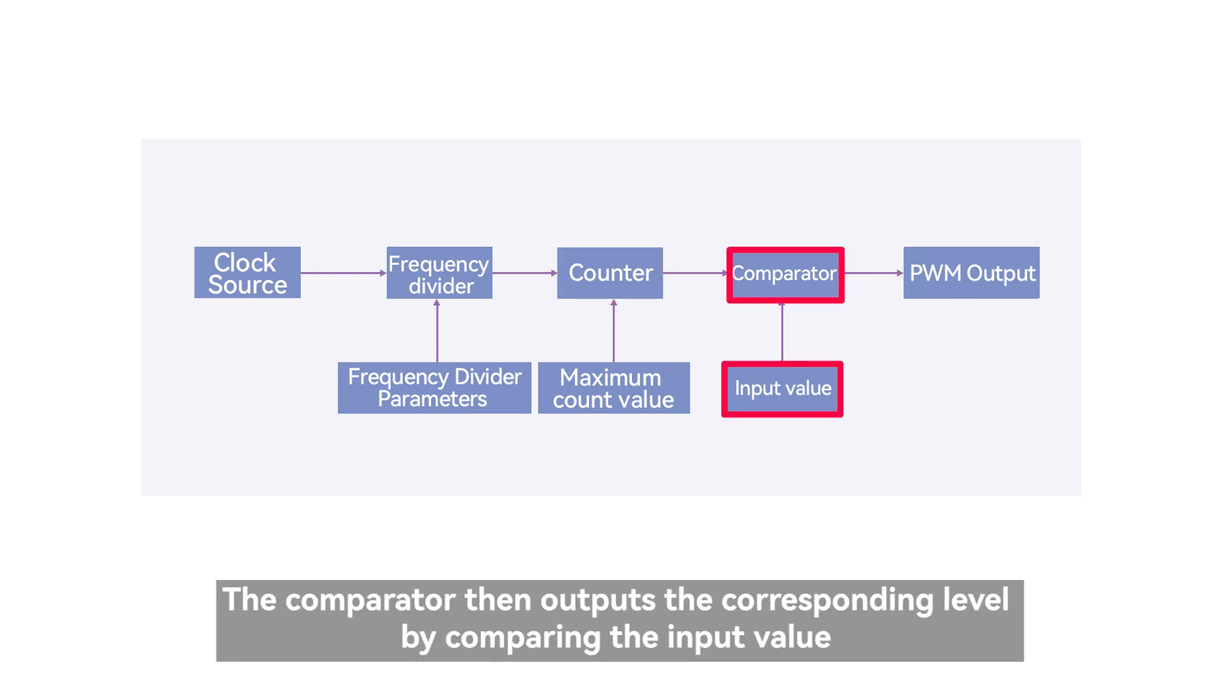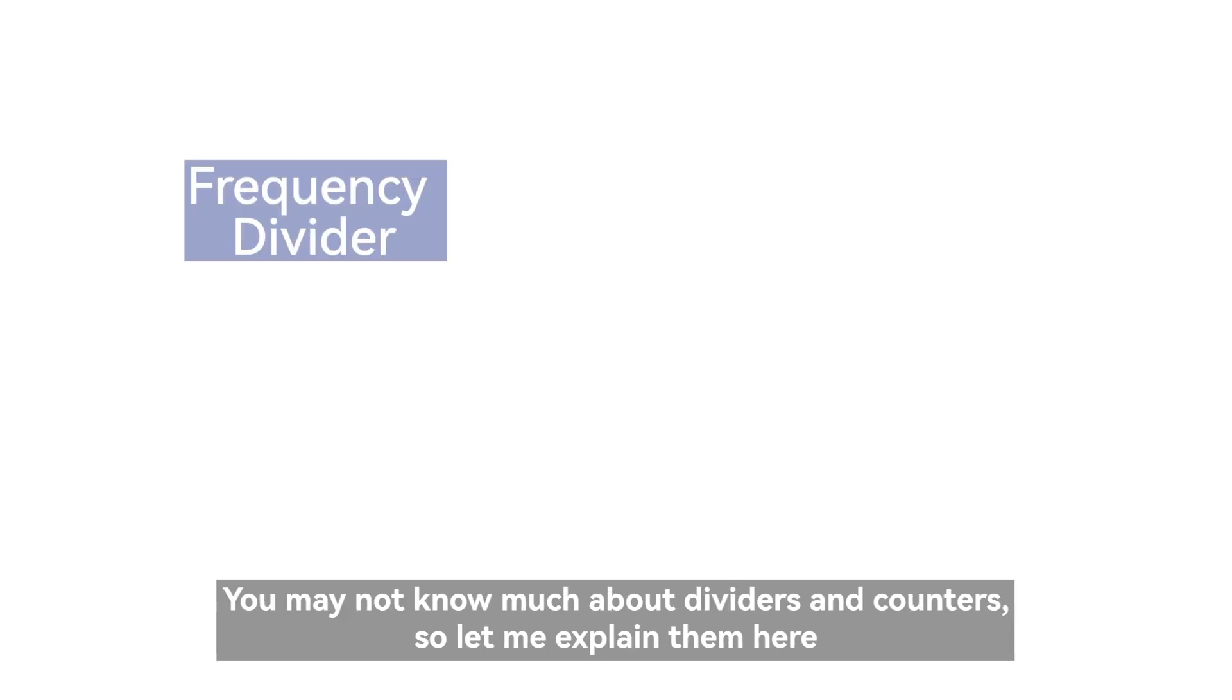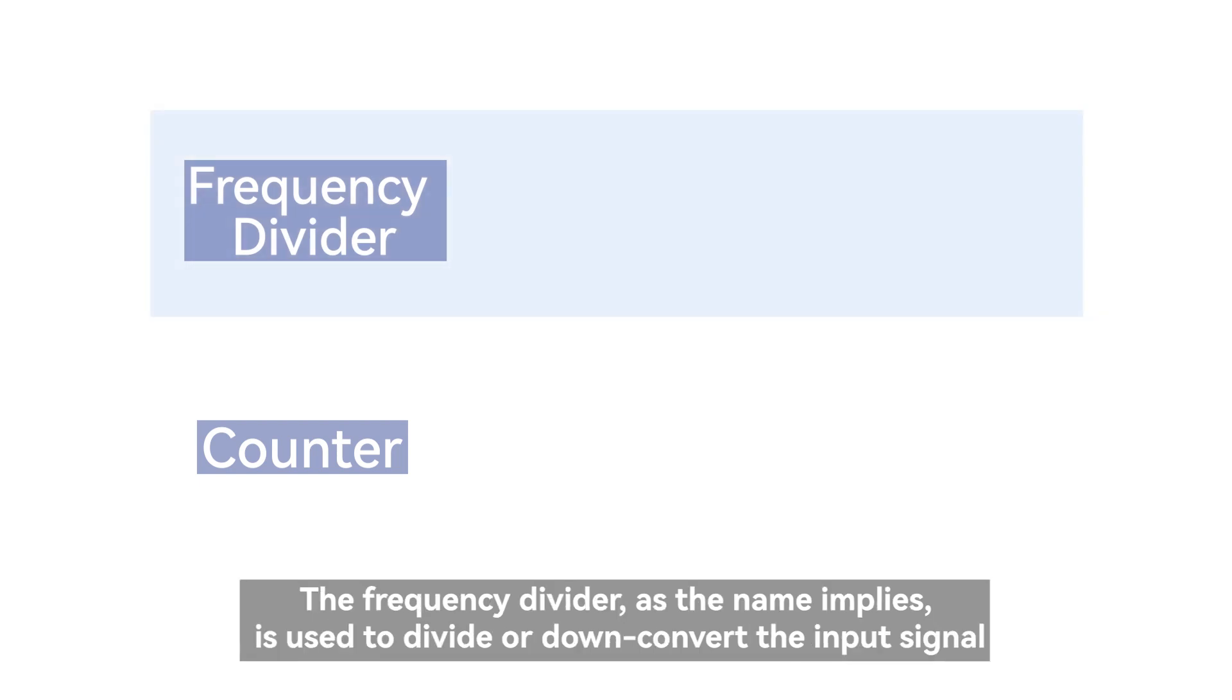The comparator then outputs the corresponding level by comparing the input value. You may not know much about dividers and counters, so let me explain them here. The frequency divider, as the name implies, is used to divide or down convert the input signal.